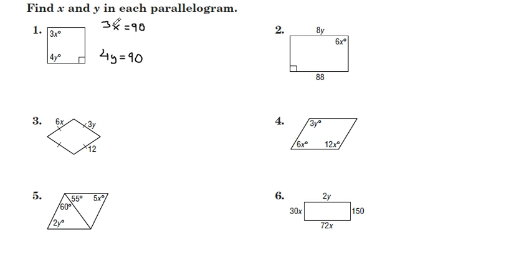Alright, and divide up here. 3x equals 90, divide both sides by 3, x equals 30. And here we're going to divide both sides by 4, 90 divided by 4, 22.5.